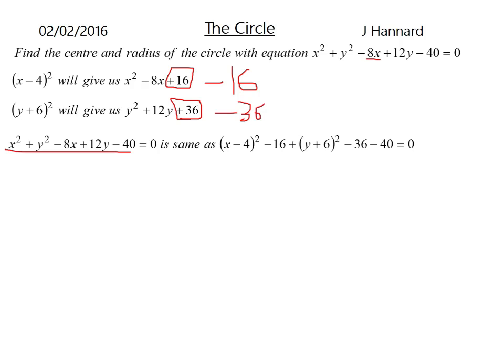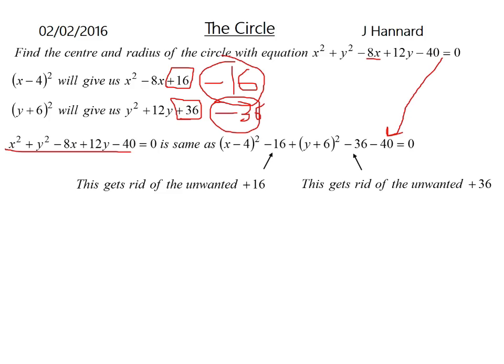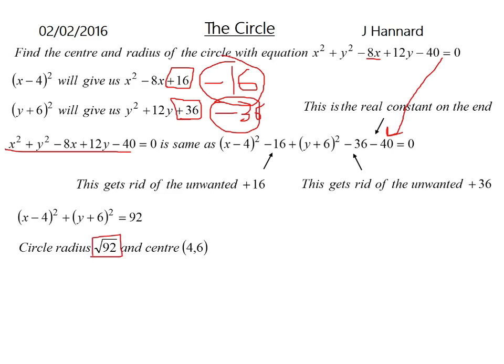So that is the same as x minus 4 squared minus your 16 from up here, added to y plus 6 squared minus your 36 from there, and bring your real constant down, which is the minus 40, and you will end up with that. So that gets rid of the unwanted plus 16, and that gets rid of the unwanted plus 36, and that is your real constant on the end. Tidy it up, take it over the other side, and you will end up with that. And that is going to be a circle with the centre of plus 4, minus 6, and a radius of root 92, which is that. That doesn't cancel down anymore, so that would be fine for the examiner. So with a radius of root 92, and a centre of 4, minus 6.